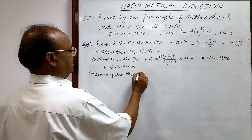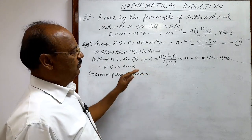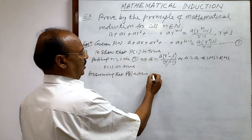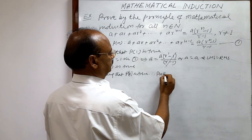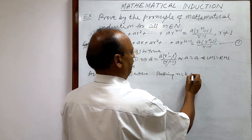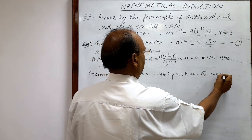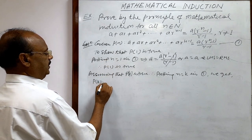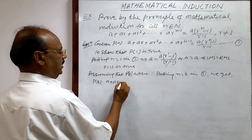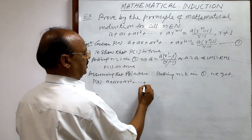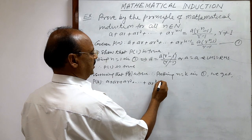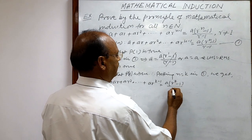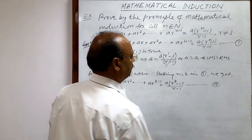Step 2: P(k) is true means that when we put n = k, we assume this relation is true. Putting n = k in relation number 1, we get: a + ar + ar² + ... + ar^(k-1) = a(r^k - 1)/(r - 1). This is relation number 2, and we are assuming that this is true.